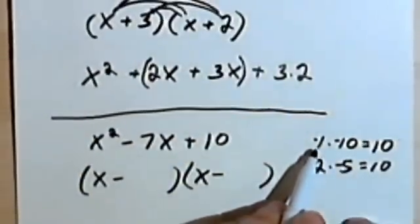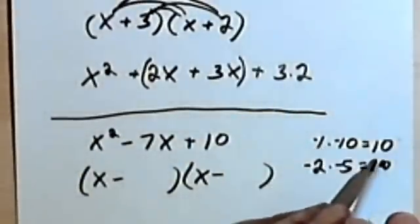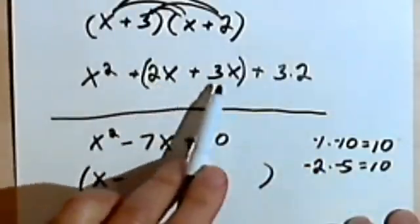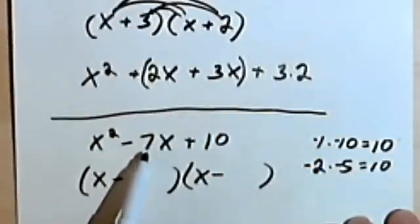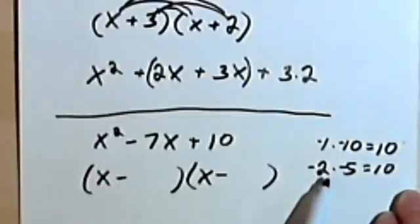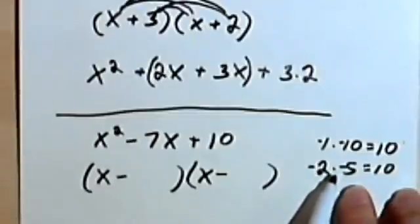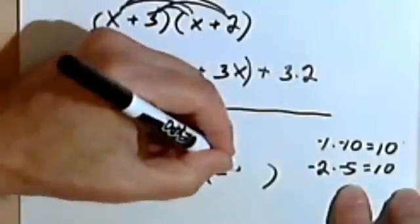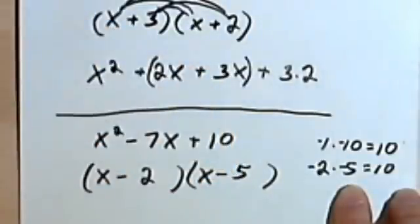Well, if I multiplied negative 1 times negative 10, I'd get a 10. But I couldn't combine them, I couldn't add them together, and get a negative 7. But negative 2 and negative 5 multiplied are 10, and added together, are negative 7. So the numbers I have must be negative 2 and negative 5.